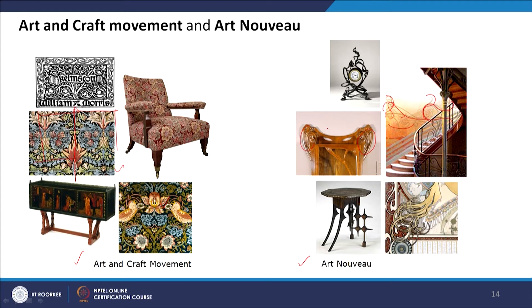In Art Nouveau we see asymmetry — even in a table clock there are very asymmetric curvilinear lines — while in Arts and Crafts there is symmetry and repetition. Looking at furniture: Arts and Crafts furniture retained the traditional mental model of a chair, looking like a traditional chair with stylistic differences in drapery and cushion design. But Art Nouveau furniture was drastically different from previous notions of furniture — these stools do not look like traditional stools at all, representing drastic stylistic departures from earlier styles.